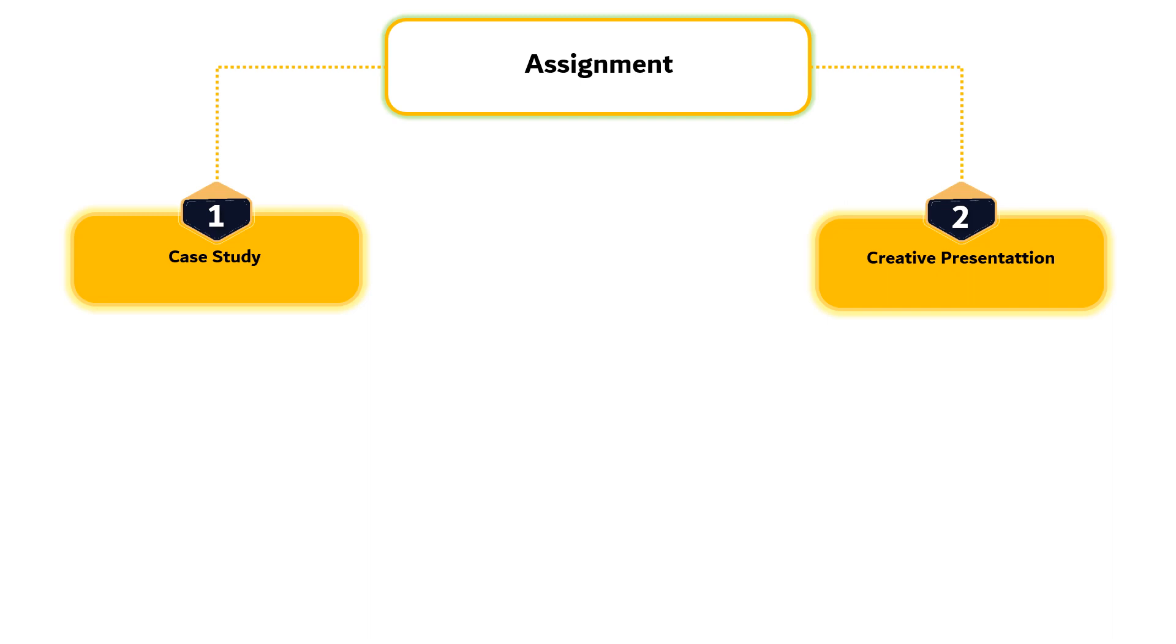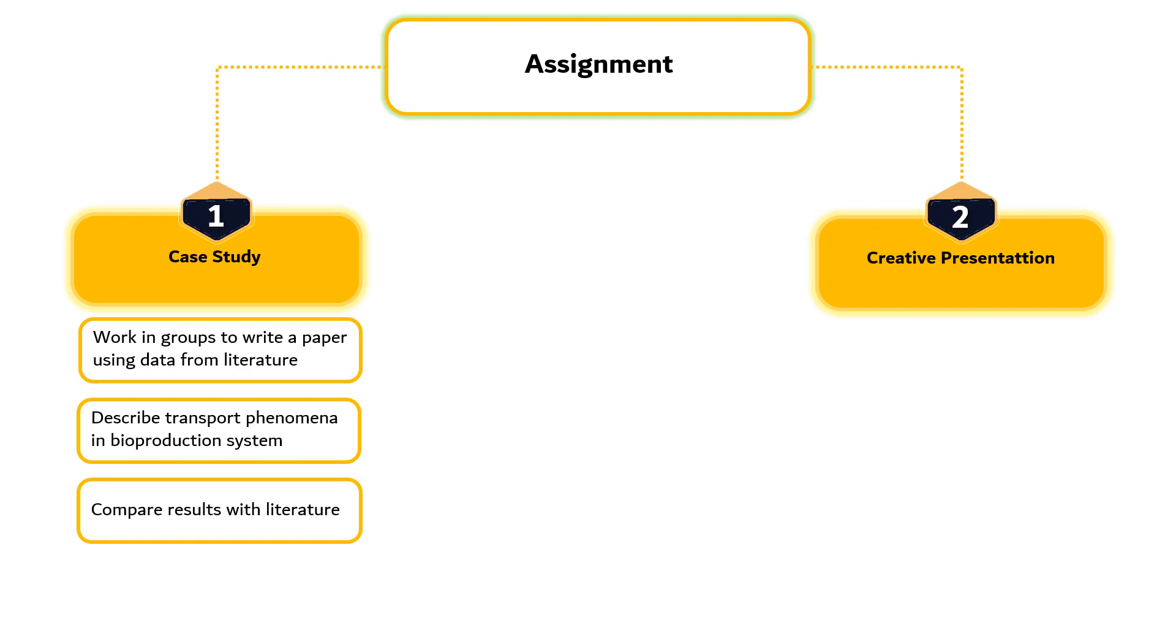Assignment 1 is Case Study. Students must work in groups which consist of 3 to 4 students to write a paper based on the data from Scopus Index journals to describe transport phenomena in bioproduction systems. As for the topic, each group may choose either momentum, energy or mass.